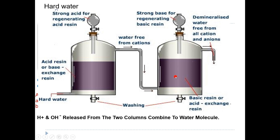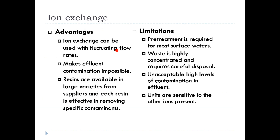After passing the basic solution, the cations on the anion exchange resin are replaced by OH– again. So in this process there are two steps: the softening step and the regeneration step. The advantages of ion exchange are: it gives only H+ and OH– ions in solution, can be used with fluctuating flow rates, and makes effluent contamination unlikely since only H+ and OH– are produced.